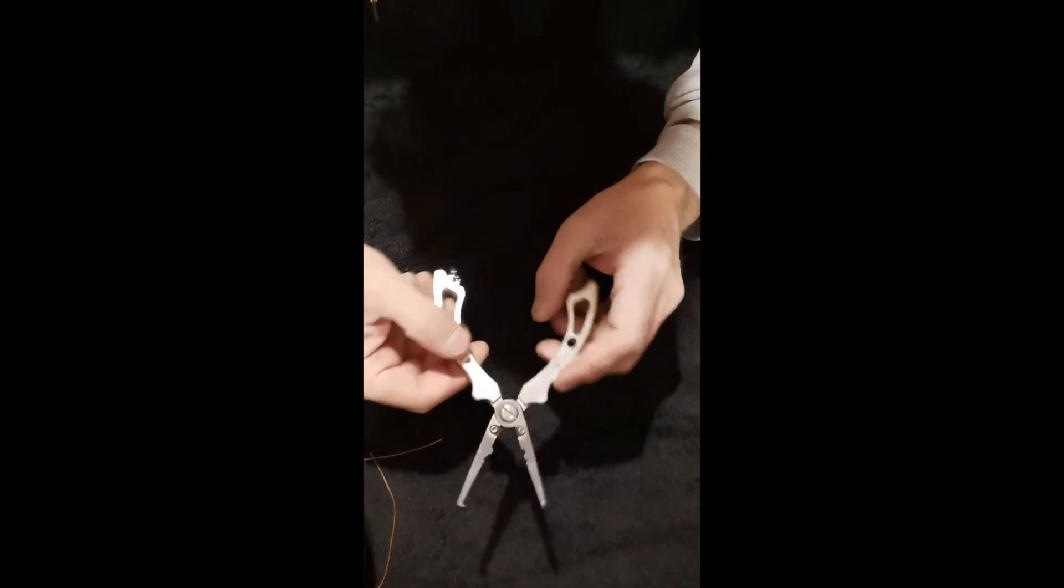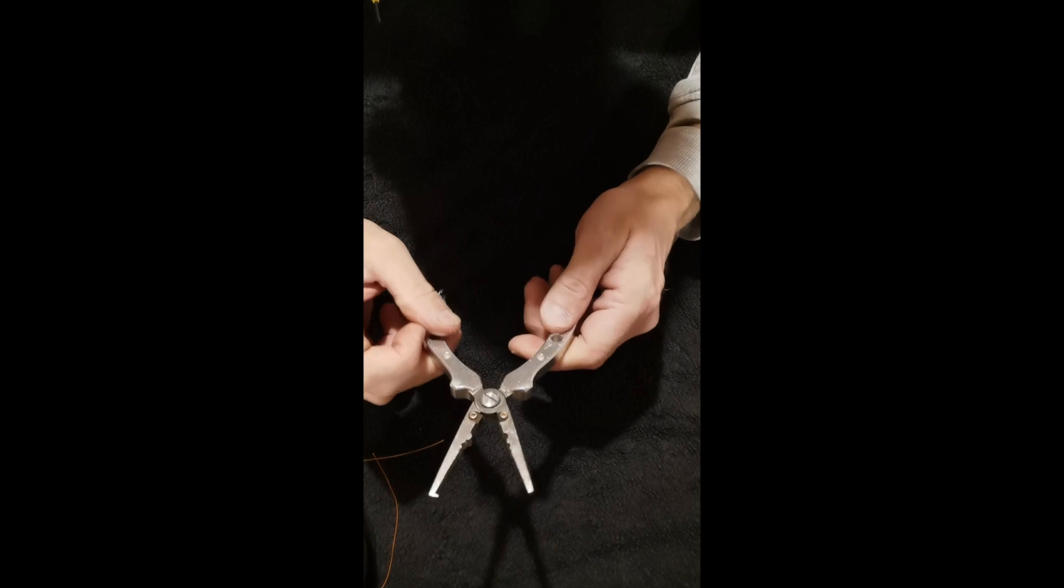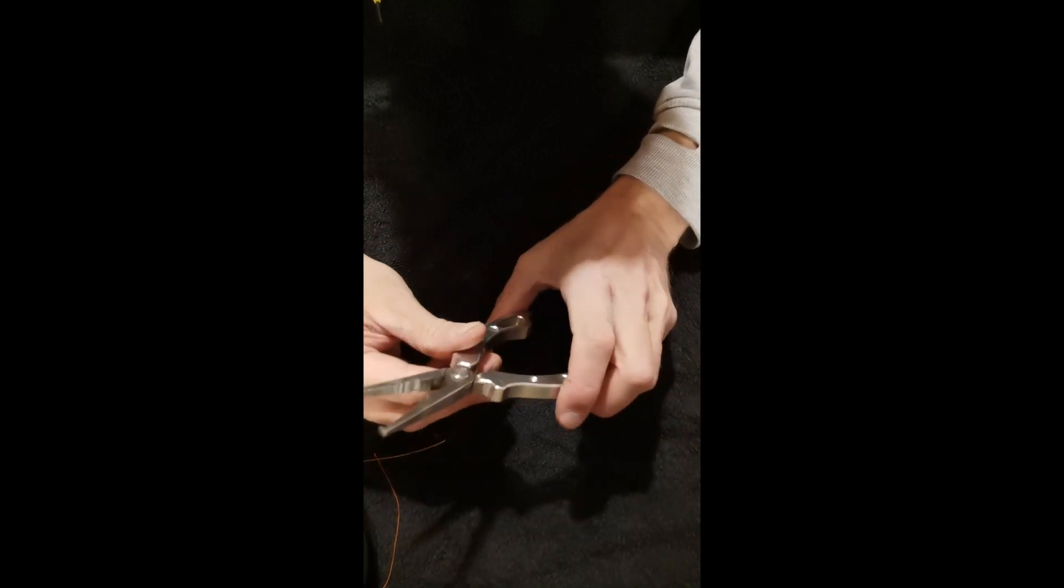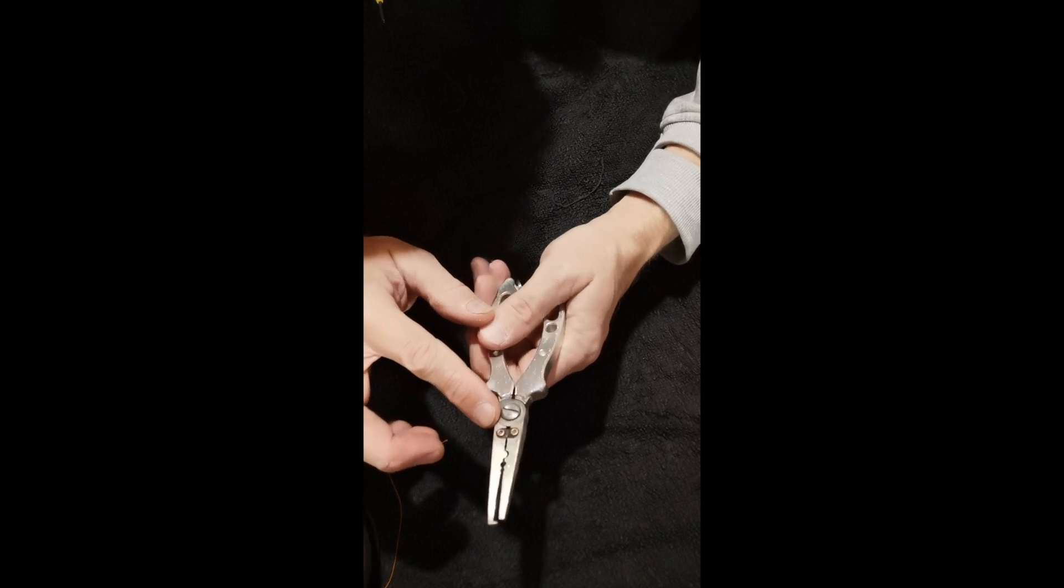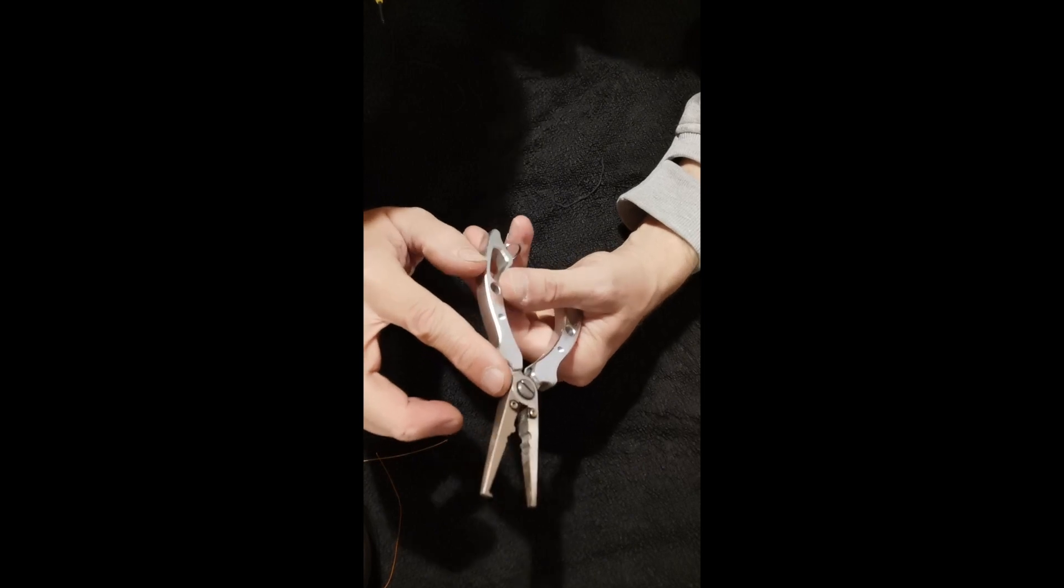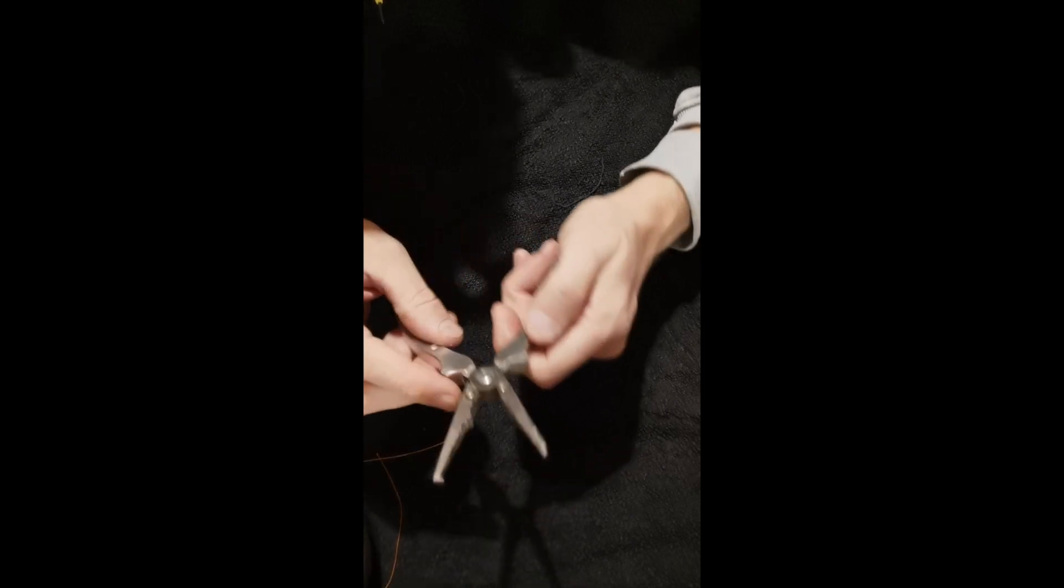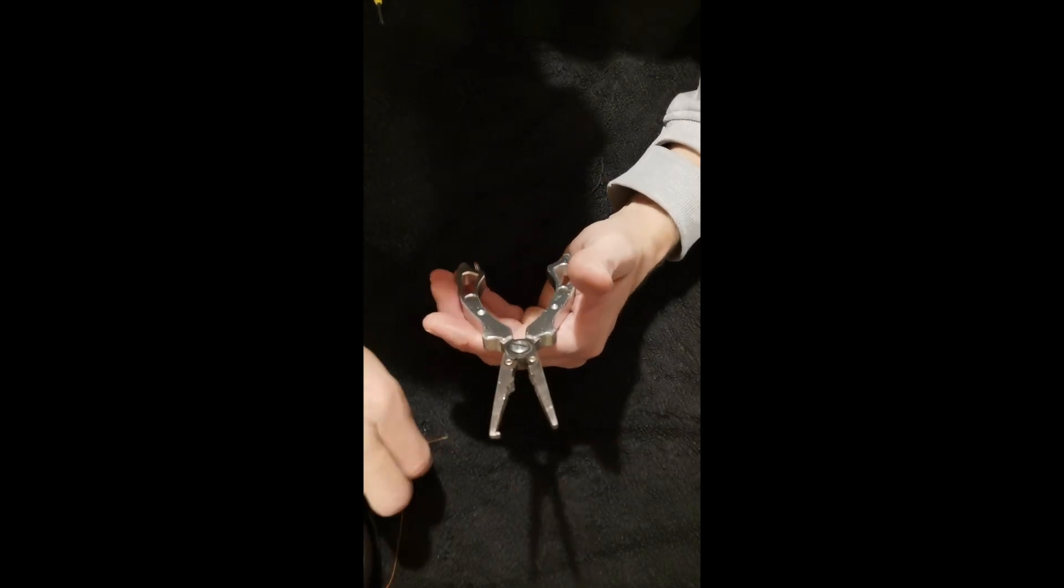Right, the next ones are these Aliexpress specials. I mean these are real plier sort of types. The difference between the cutters on these ones though is they're just like a guillotine sort of feature. There's a little block there and this little ridge, and obviously the blade cuts into it.